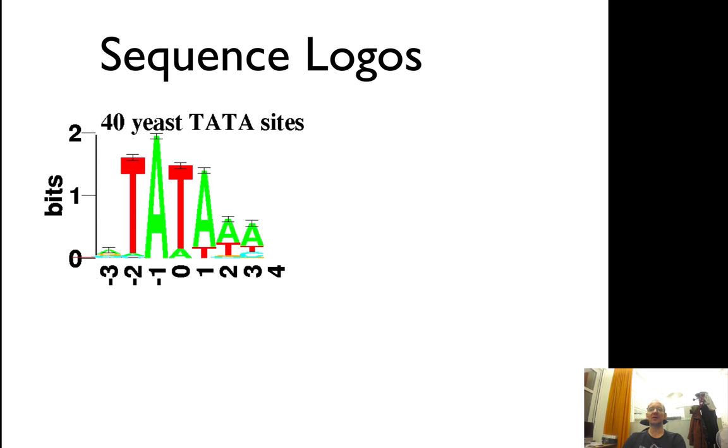If you take 40 yeast TATA sites, you will have this pattern. You see that A in this case is completely conserved, but the T's surrounding it are slightly less conserved and the next A is slightly less conserved. But you also can see that in positions two and three, you have some information also. It's better than random because random would be zero. You have some preference to have A's and T's there, and in position three there seems to be some information to have a C there.